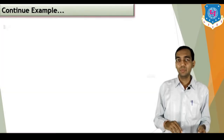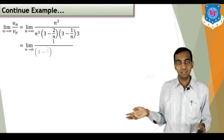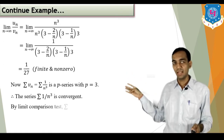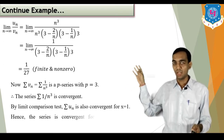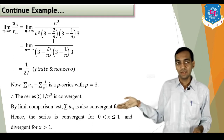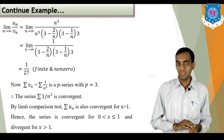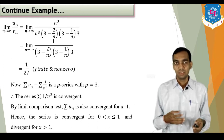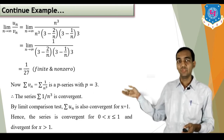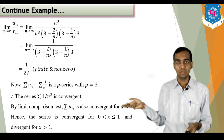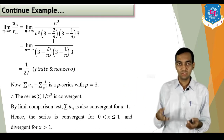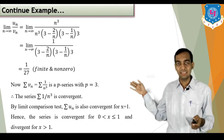Since the limit is 1/27 — a non-zero finite number — we apply the comparison test. Sigma v_n = sigma 1/n³ is a p-series with p = 3 > 1, so sigma v_n is convergent. Therefore sigma u_n is also convergent for x = 1.